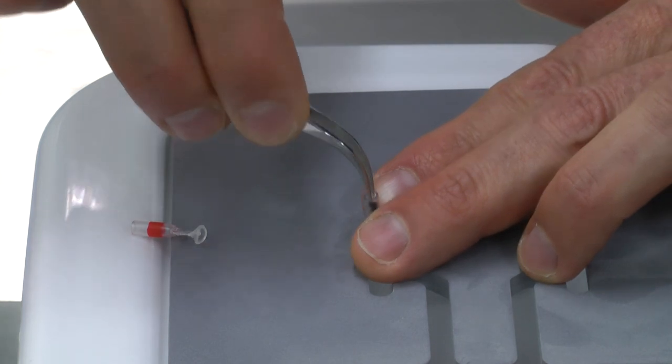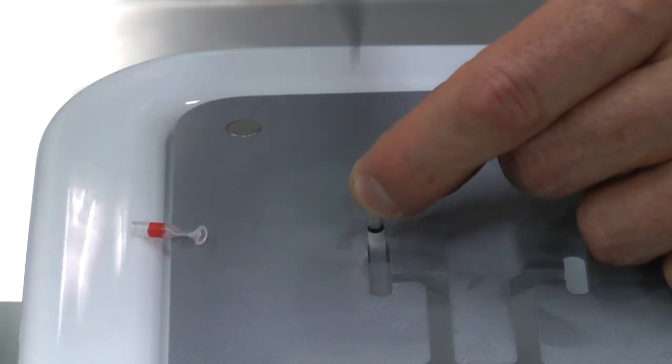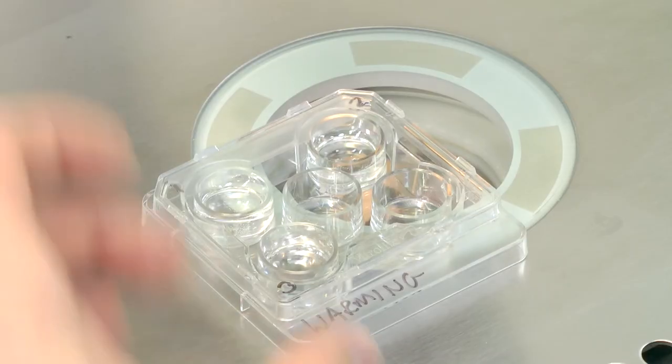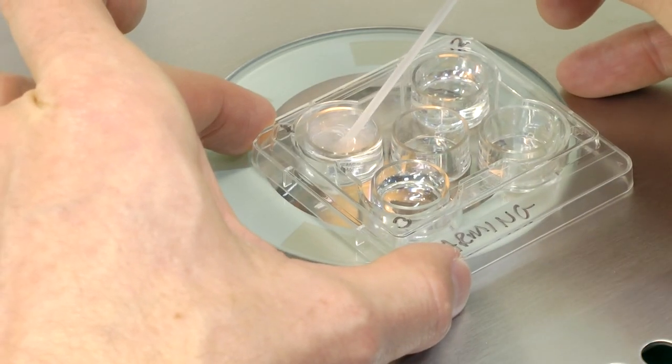Lift the RapidEye out of the straw using the forceps, just high enough so that you can grab hold of it with your fingertips. Remove the lid of your dish and in one quick movement, place the RapidEye inside the first solution.